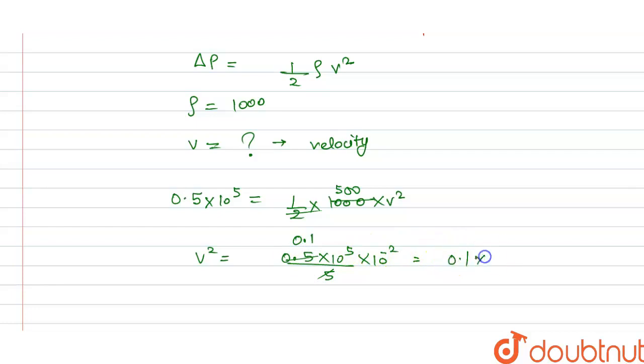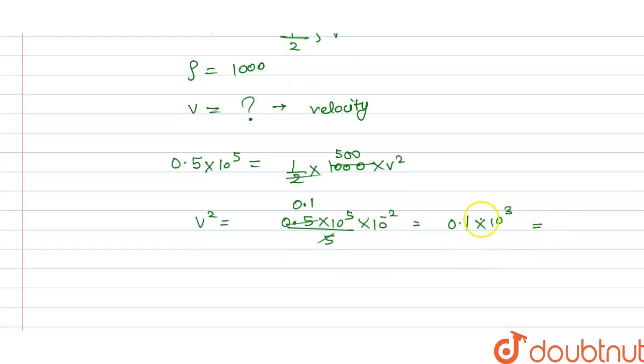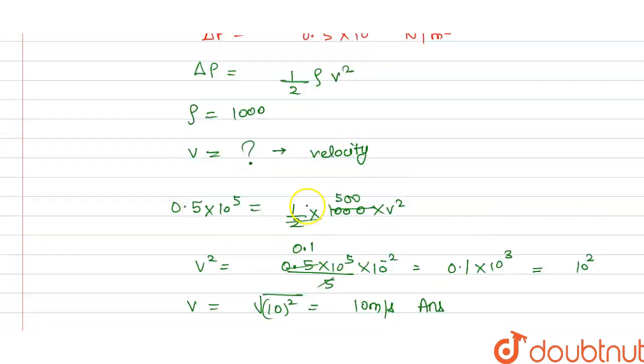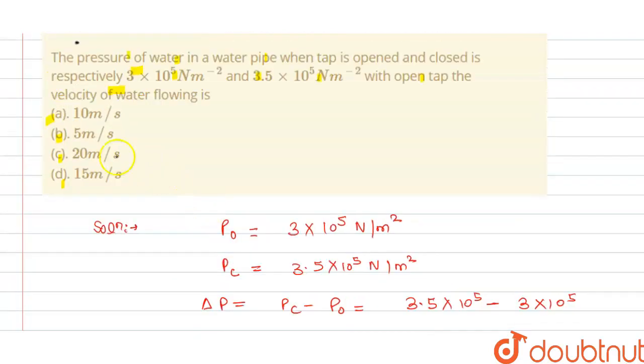If we apply square root, under root of 10 square, this will become 10 m/s. This is the velocity and the answer for the question. Now we check which option is correct - our option A is correct. Thank you.